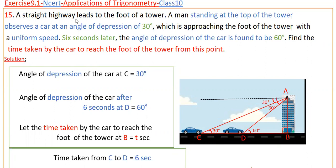A straight highway leads to the foot of a tower. A man standing at the top of the tower observes a car at an angle of depression of 30 degrees, which is approaching the foot of the tower with a uniform speed. Six seconds later, the angle of depression of the car is found to be 60 degrees. Find the time taken by the car to reach the foot of the tower from this point.